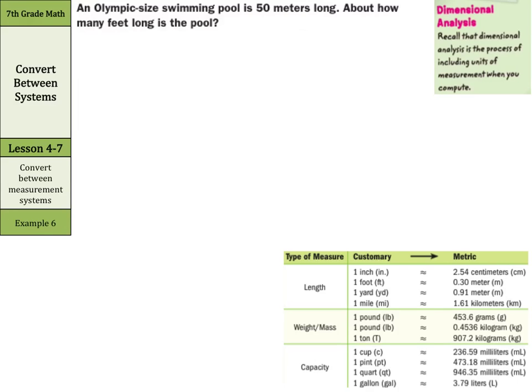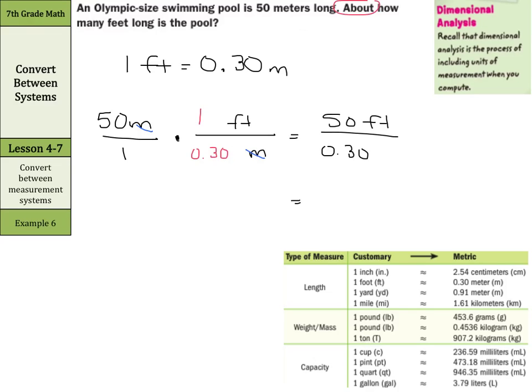An Olympic-sized swimming pool is 50 meters long. About, about, about, my favorite word. That means we get to estimate how many feet long is the pool. Well, we know that 1 foot is equivalent to 0.30 of a meter. That's the fact. We're going to have 50 meters over 1 times, well, meters over feet. Since our meters are going to cancel out here, and we'll have 1 foot is equivalent to 0.30 meters. So we get 50 feet, since 50 times 1 is 50, and 1 times 0.30 is 0.30. And now divide 50 by 0.30,